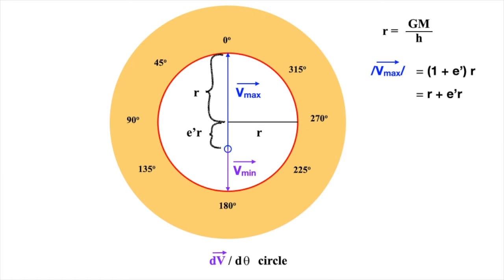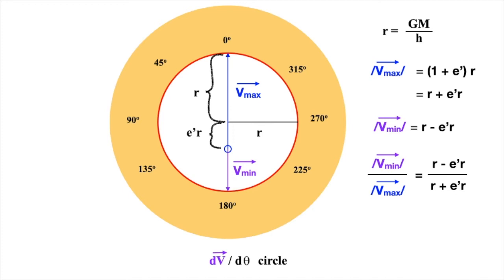Now we draw in Vmin, which is pointing straight down towards theta of 180 degrees, indicating that the planet when its velocity is Vmin is at an angle of azimuth of 180 degrees. If the magnitude of Vmax equals R plus E prime R, then it should be readily apparent that the magnitude of Vmin must be R minus E prime R. Dividing one equation by the other, the magnitude of Vmin divided by the magnitude of Vmax equals R minus E prime R divided by R plus E prime R.